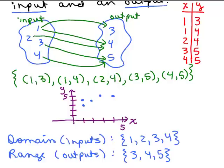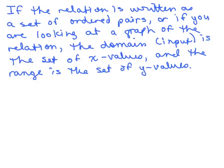It's a lot of vocabulary just to get started, but basically this relation has some inputs and some outputs. If the relation is written as a set of ordered pairs, or if you're looking at the graph, the domain is simply the set of x values and the range is the set of y values. But you might not be looking at a relation that has numbers in it at all.